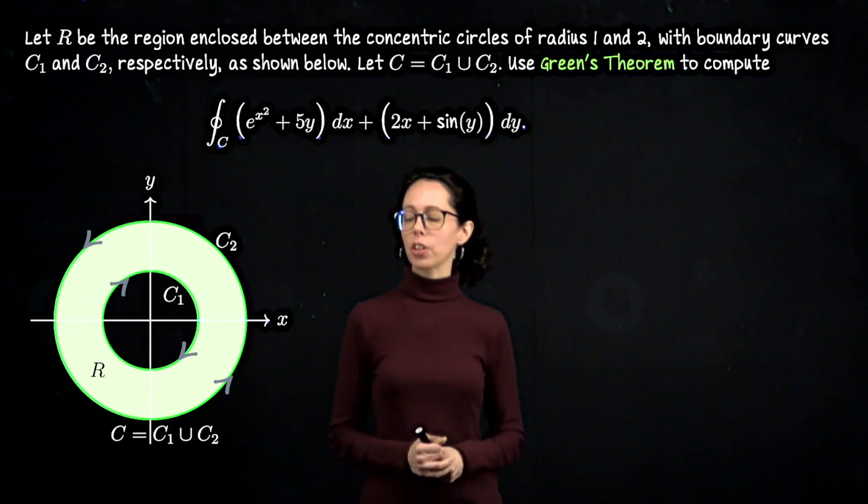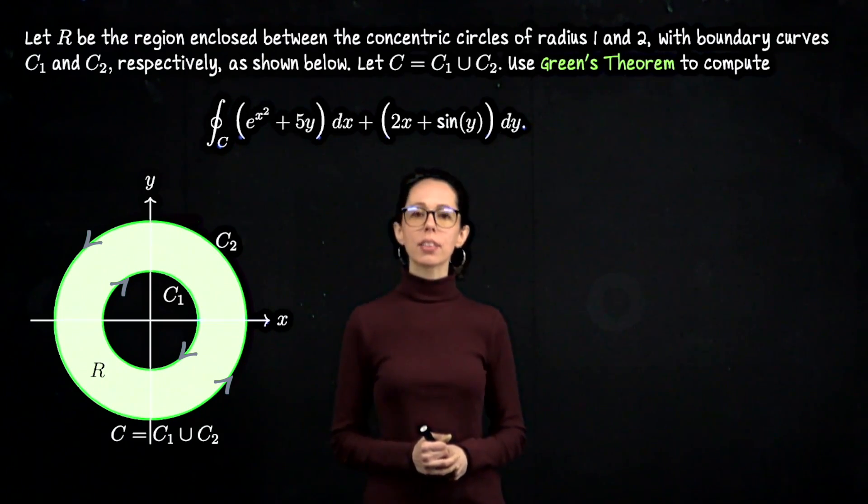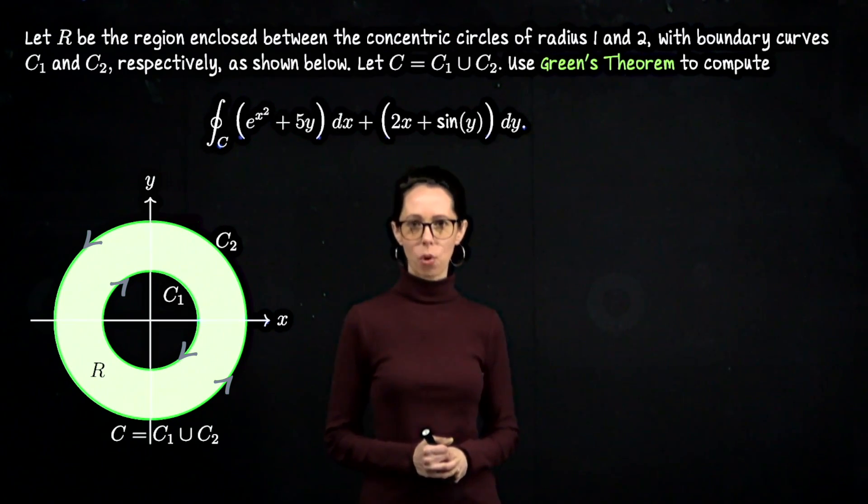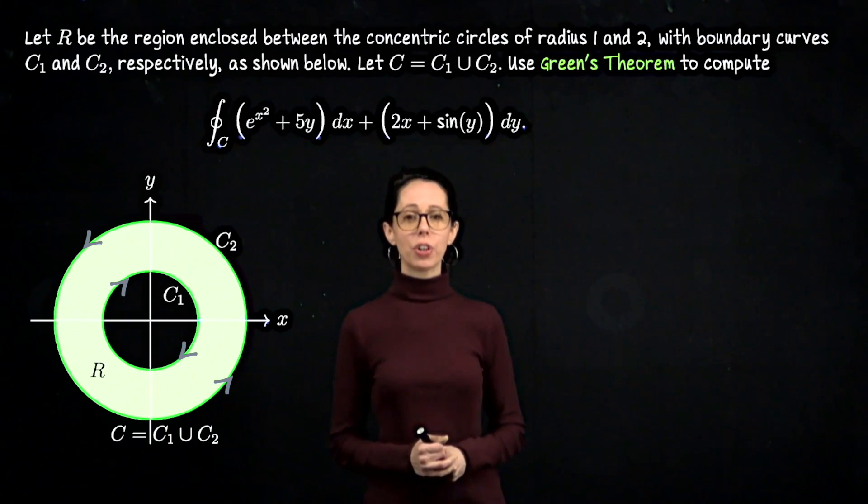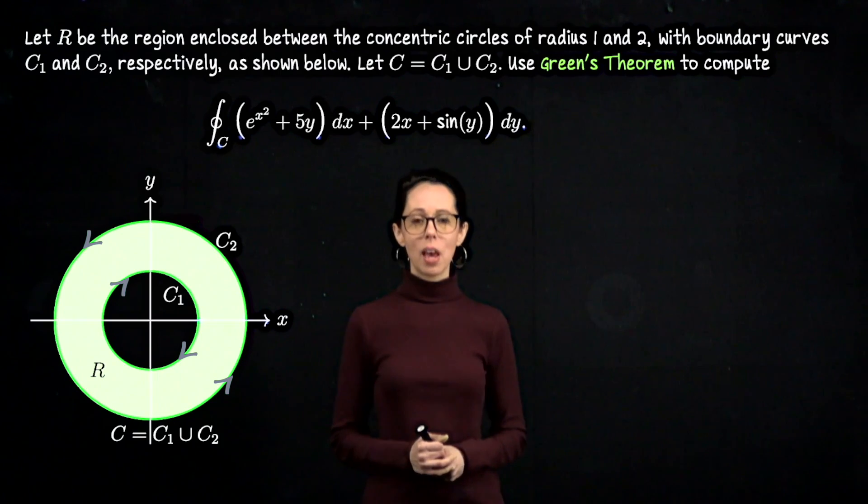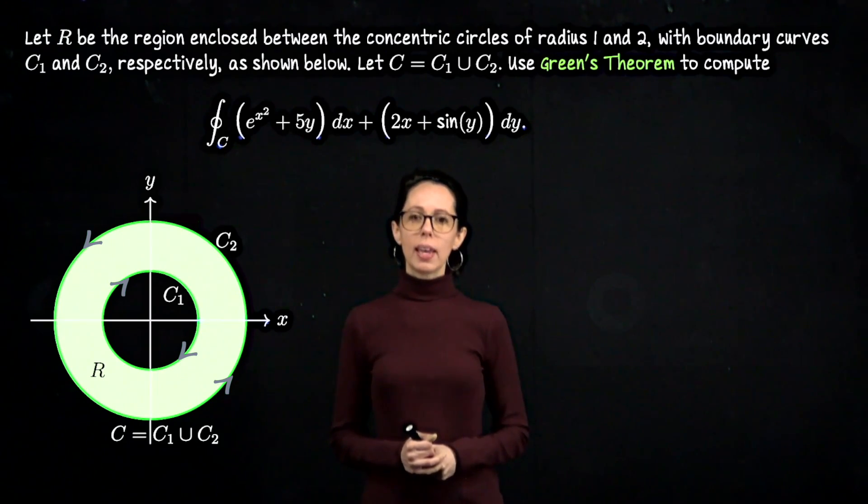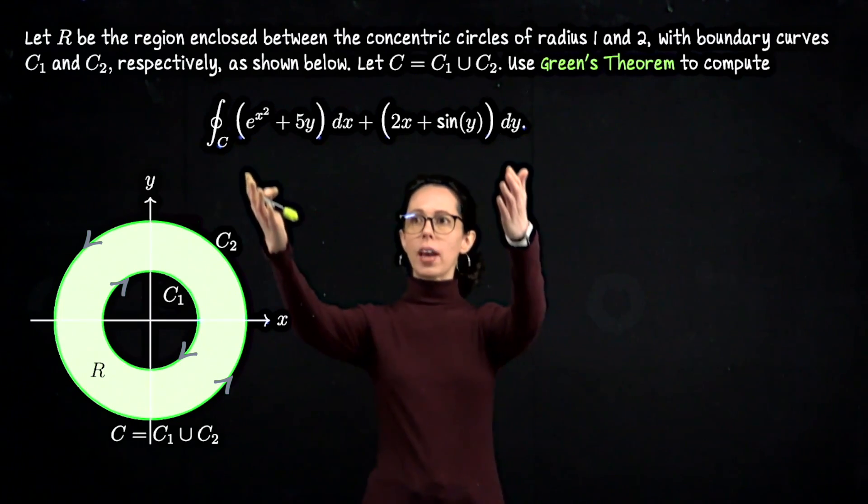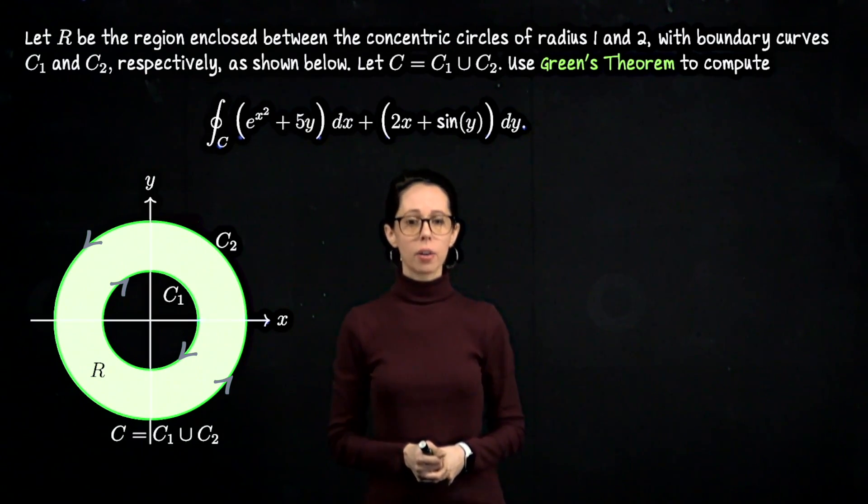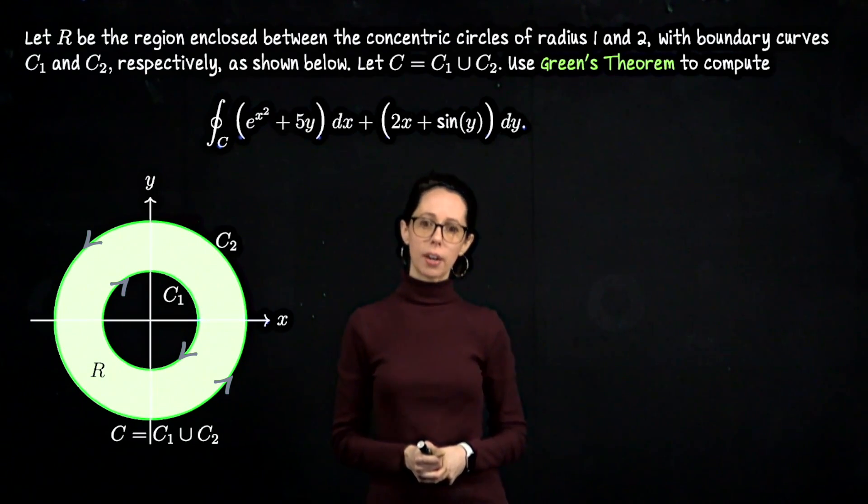The interior circle of radius 1 has been parametrized in the clockwise direction, so that's its sense of orientation, and then the outer circle is going counterclockwise. What we have been asked to do is compute the circulation of this vector field around the boundary of R, which is the union of these two closed curves.